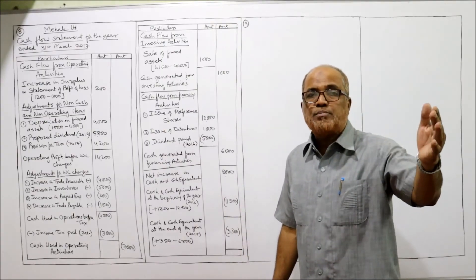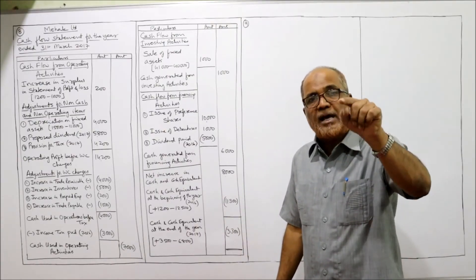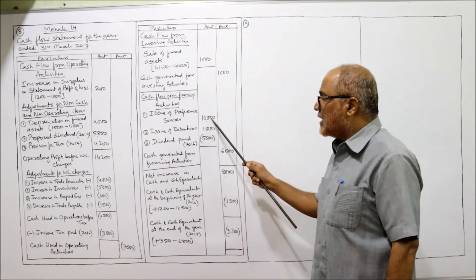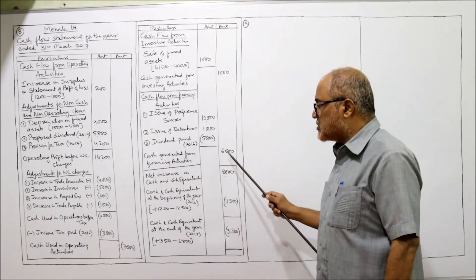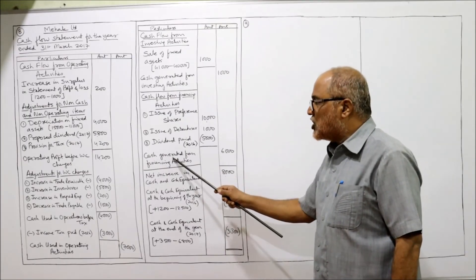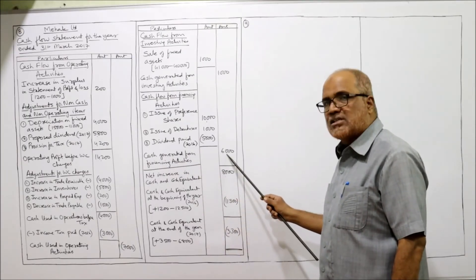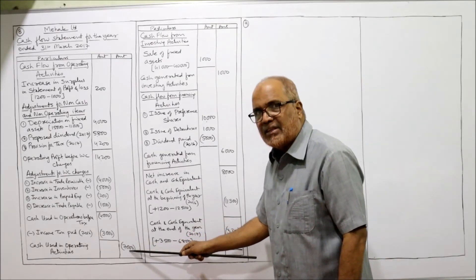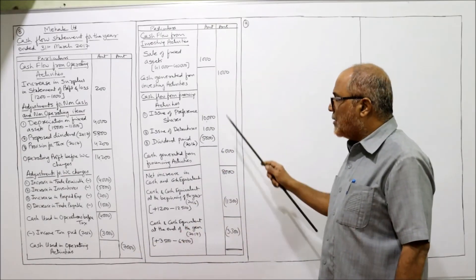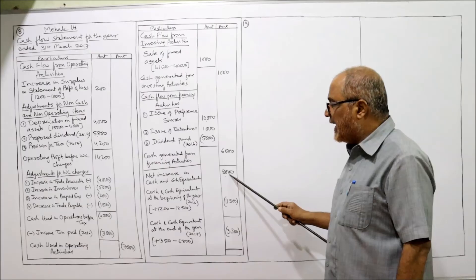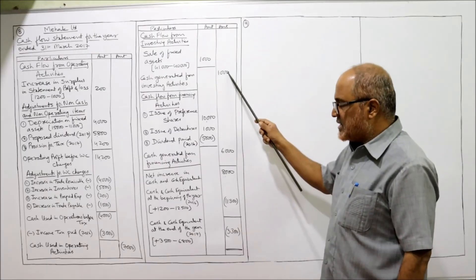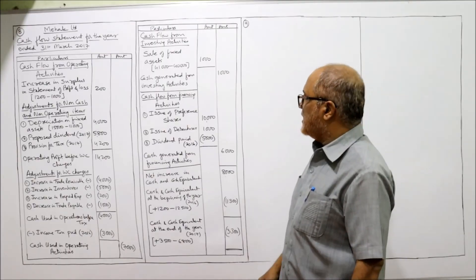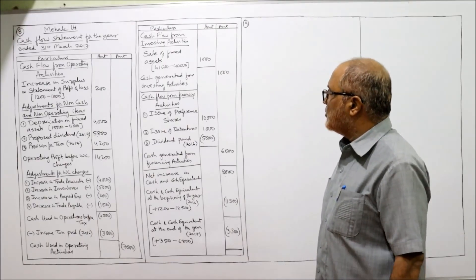Financing activity: 10,000 plus 1,000 minus 5,000 equals 6,000. Cash generated from financing activity is 6,000. Now take the total: minus 7,000 plus 1,000 plus 6,000 equals zero — wait, 6 plus 1 is 7, giving zero — but the net increase in cash and cash equivalents needs recalculation.